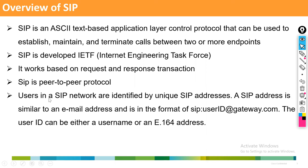Users in a SIP network are identified using SIP addresses, which are similar to email addresses. For example: sip:sayed@wipro.com. The format is sip:userID@gateway.com, or you can use an IP address instead of a hostname. You can also identify users in the E.164 format.